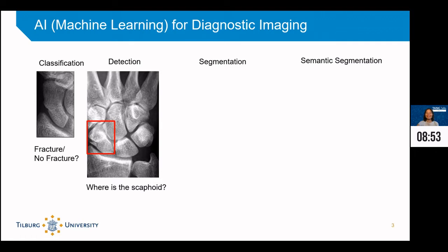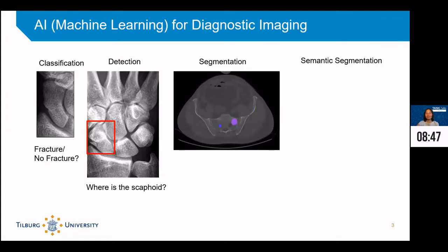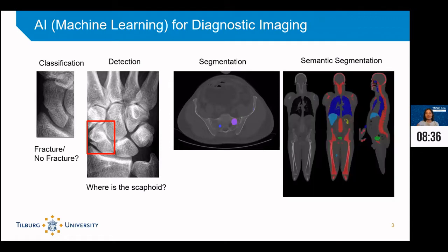Another machine learning task for images is image segmentation. This involves highlighting foreground elements to make it easier to evaluate them. Image segmentation provides a pixel-by-pixel detail of an object in an image. There's also semantic segmentation, which refers to the process of linking each pixel in an image to a specific label — you can think of this as classification at the pixel level.